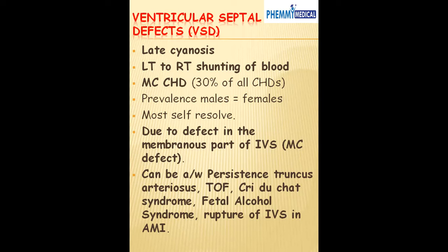Normally, after the child is born, the pressure on the left side is greater than the pressure on the right side. Because of that, if there's a defect between the ventricles, blood moves from the left ventricle into the right ventricle. The blood being shunted is oxygenated blood from the left ventricle. VSD is the most common congenital heart disease, accounting for about 30% of all congenital heart disease. Prevalence is equal in males and females, and most cases self-resolve.